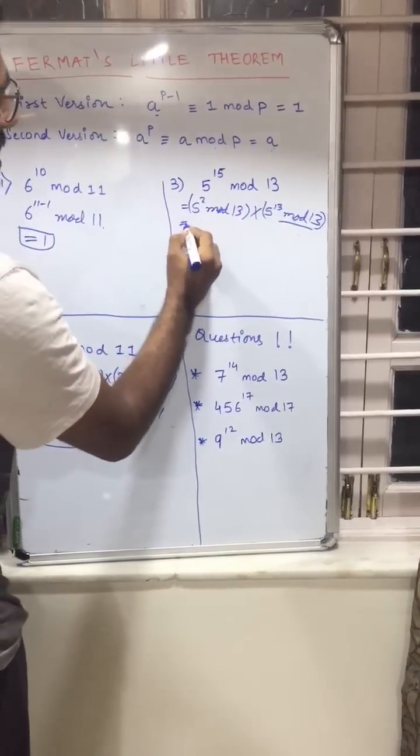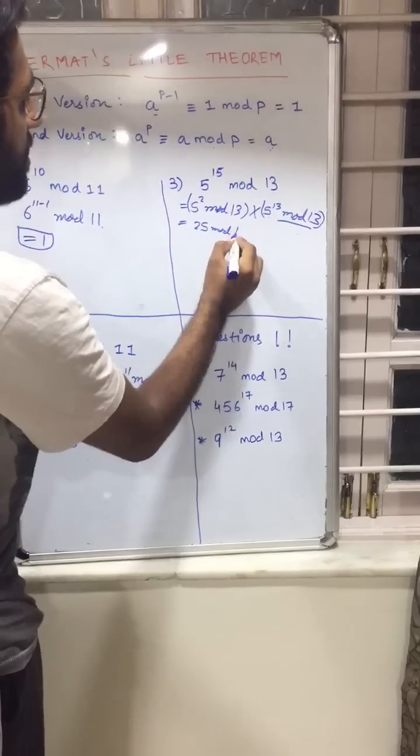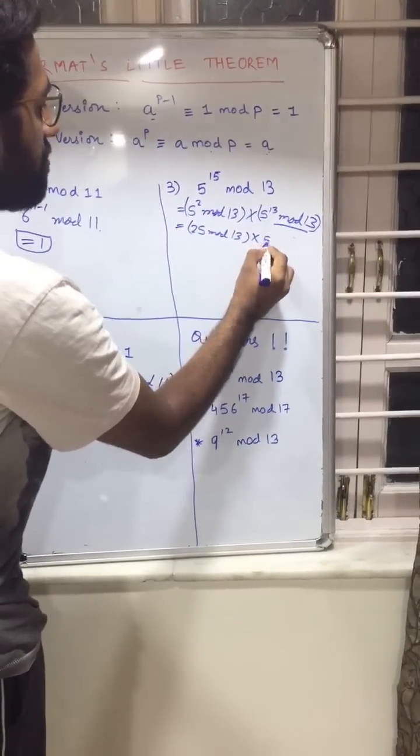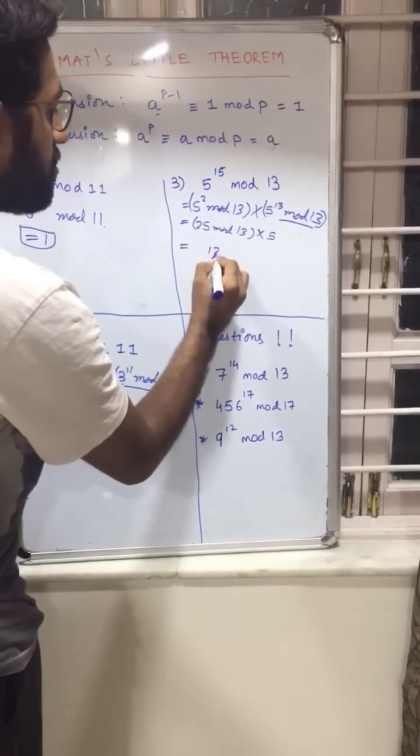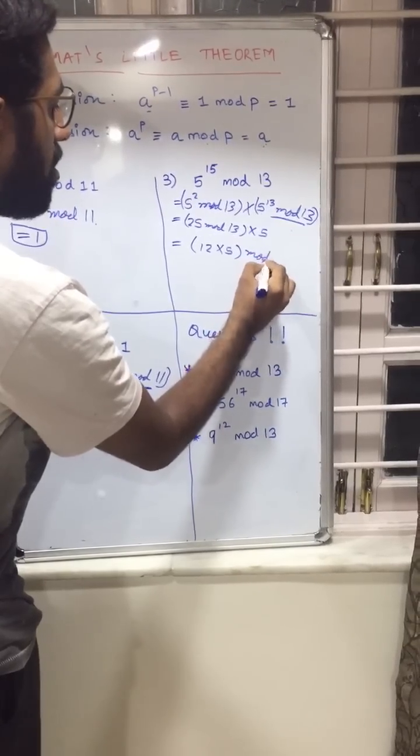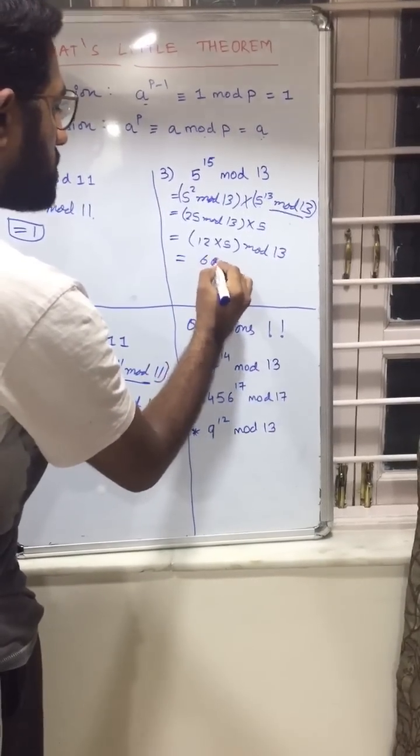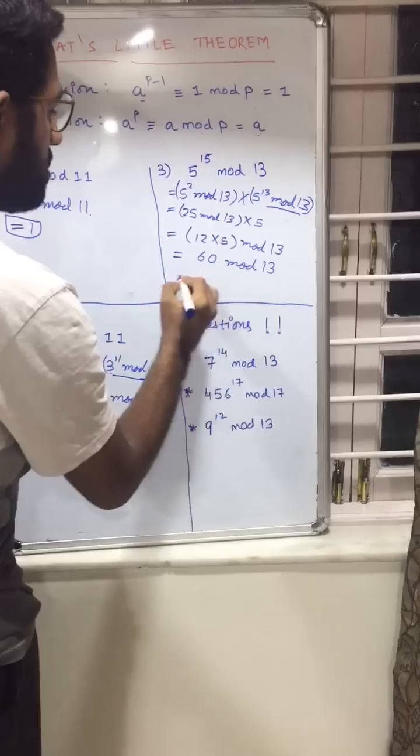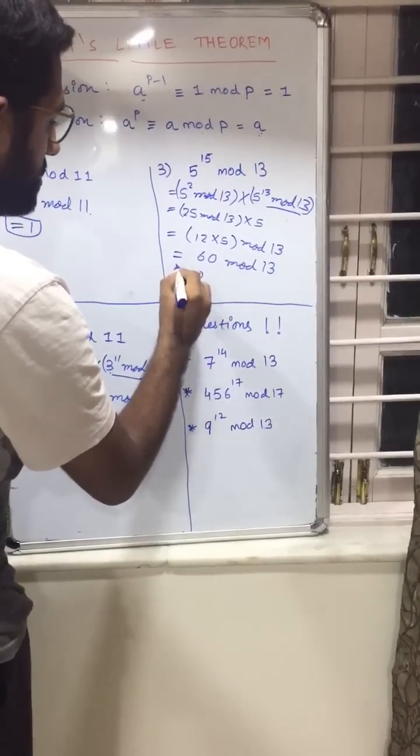So this we can write it as 25 mod 13 into 5, which is equal to 12 into 5 mod 13, which is equal to 60 mod 13. So our final answer here will be equal to 8.